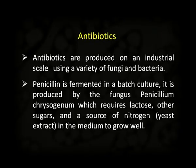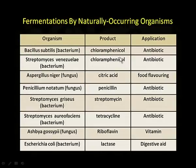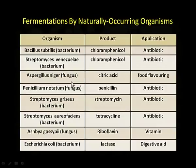Antibiotics are produced on an industrial scale using a variety of fungi and bacteria. Penicillin is fermented in a batch culture produced by Penicillium chrysogenum, which requires lactose, other sugars, and a nitrogen source — yeast extract — in the medium. Looking at this slide, these are the organisms producing important antibiotics. Chloramphenicol is produced by Bacillus subtilis and Streptomyces venezuelae. Aspergillus niger is a fungus producing citric acid, used as a food flavoring agent. Streptomyces griseus is used for producing streptomycin on a large scale.